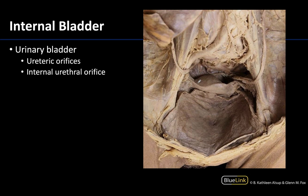Now let's talk internal bladder structures. You can only see these if you've made an incision into the bladder, which is what has happened here — some of the superior bladder has been removed and it's been opened quite large to see the internal views. To get our bearings, here is the uterus and here are the uterine tubes. You can see these tiny slit-like openings which are your ureteric orifices, where the ureters enter the bladder. In close proximity, and generally a little larger and more midline, is the internal urethral orifice. Connecting these regions forms the trigon of the bladder.